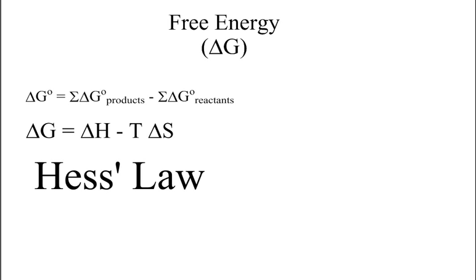You can also use Hess's Law, where they give you several different equations. You just have to figure out which pathway will give you your products, and then sum up the Delta G values that go with each one.